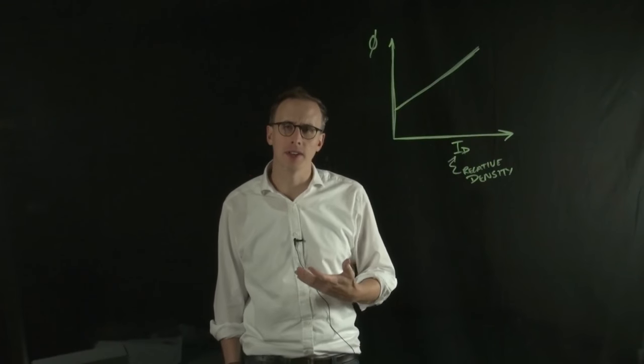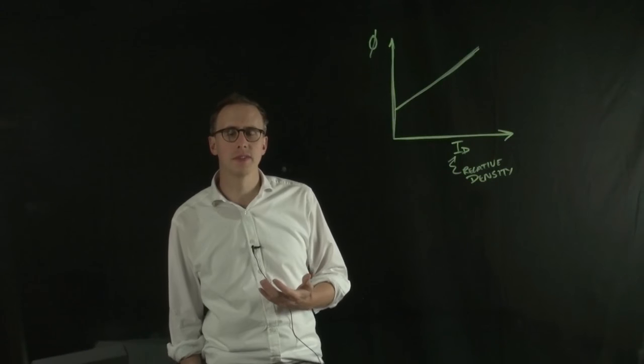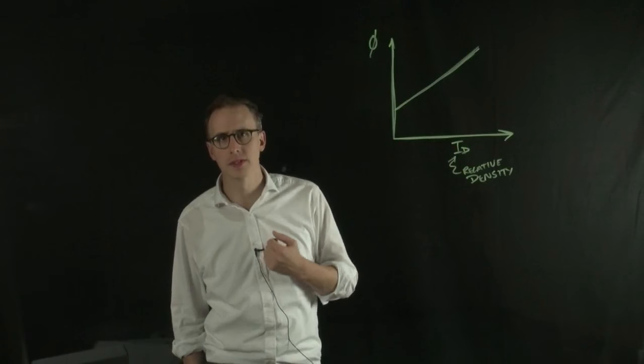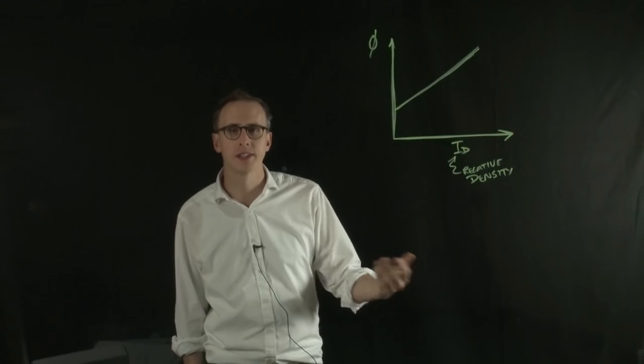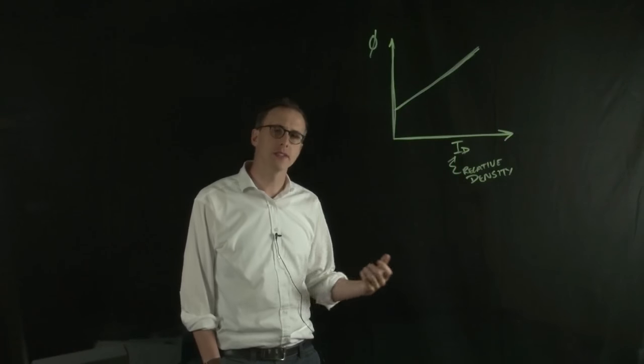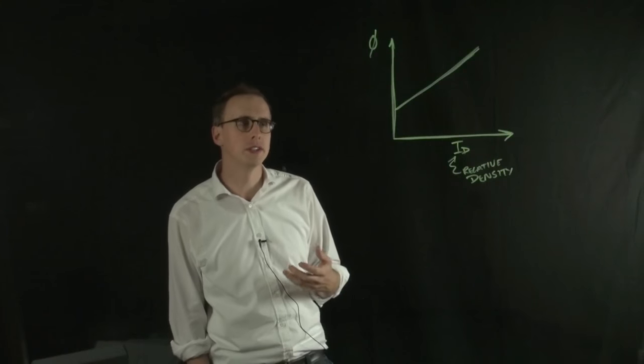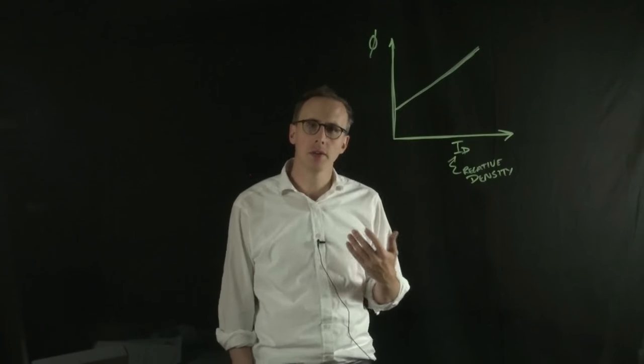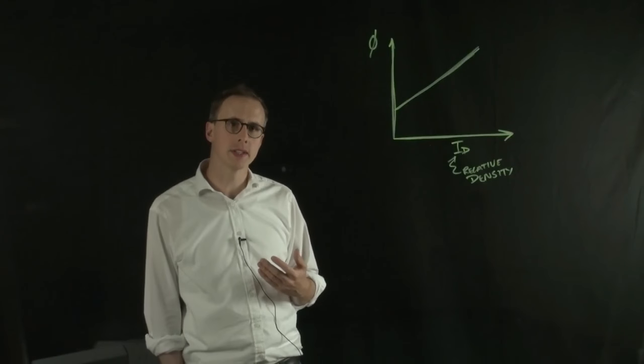So we've introduced the idea of angle of friction as a sort of material-specific parameter. We know clays have a certain angle of friction and cohesion, and sands have a certain angle of friction and cohesion. But actually, it's not a material-specific parameter.